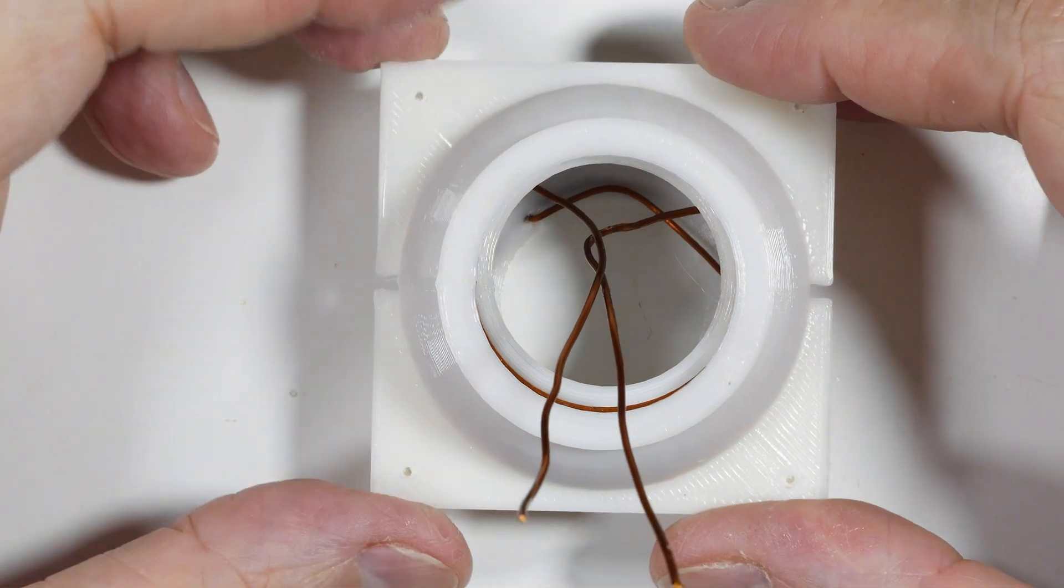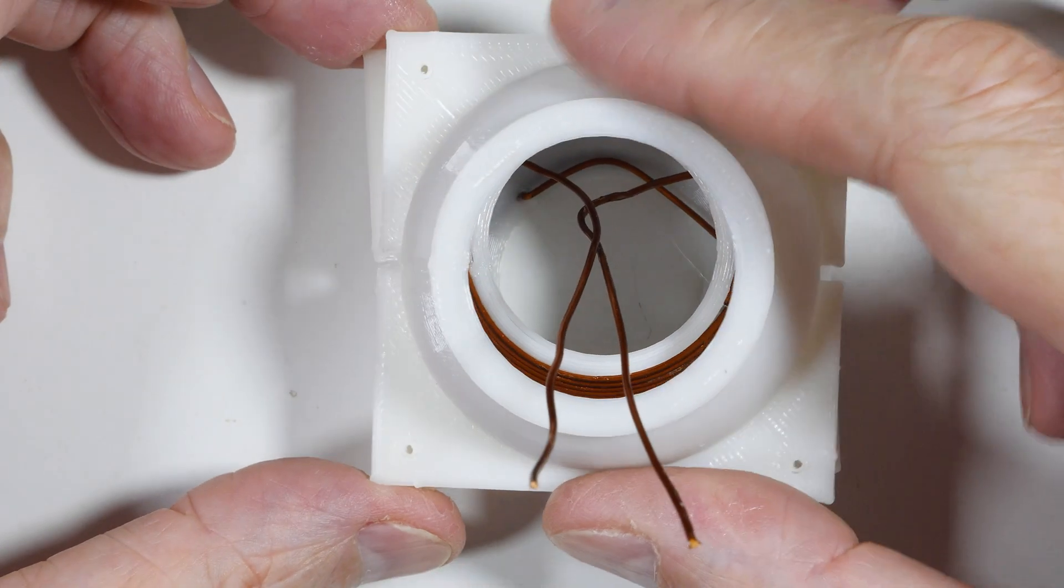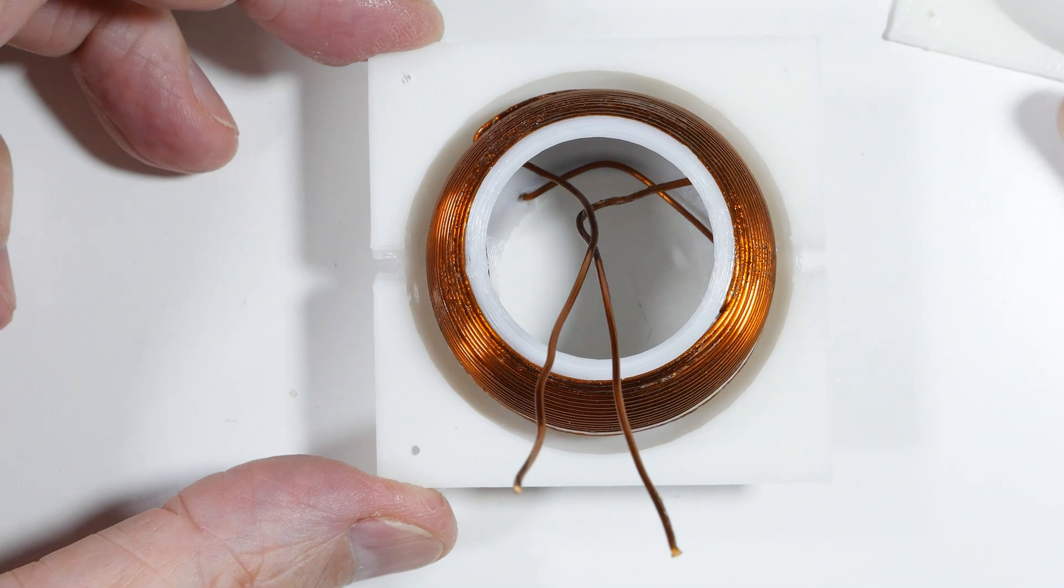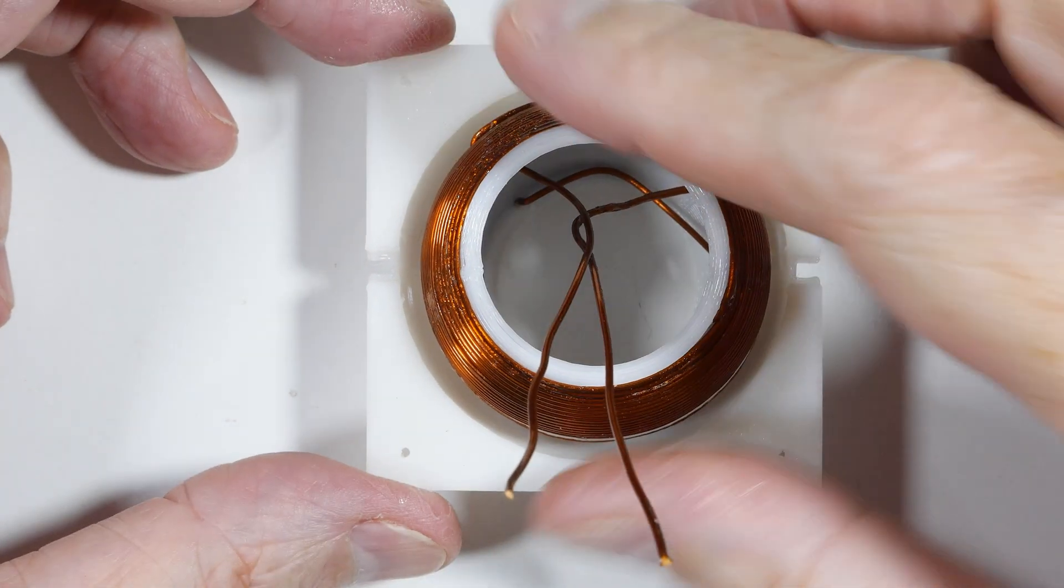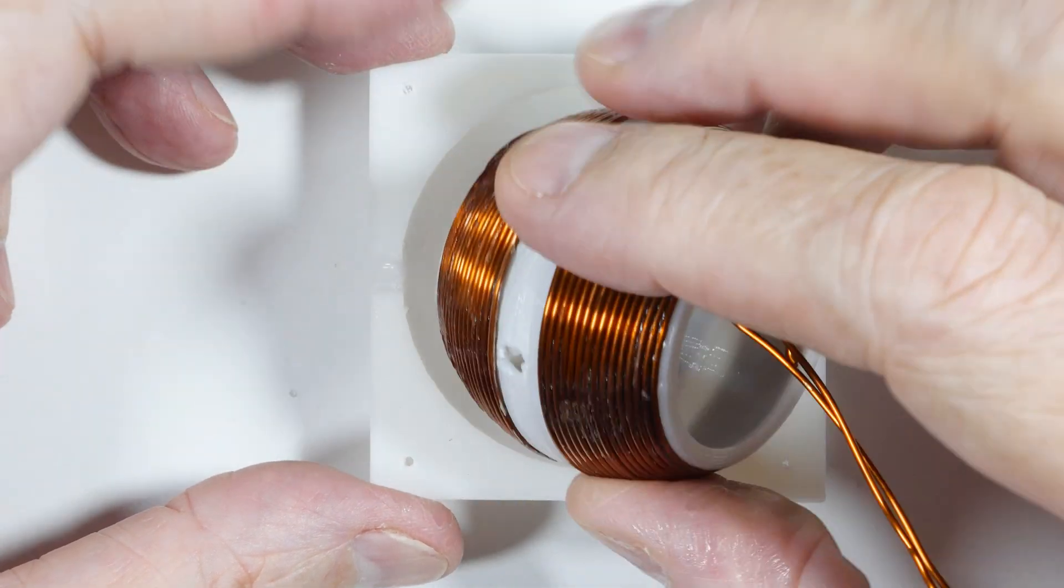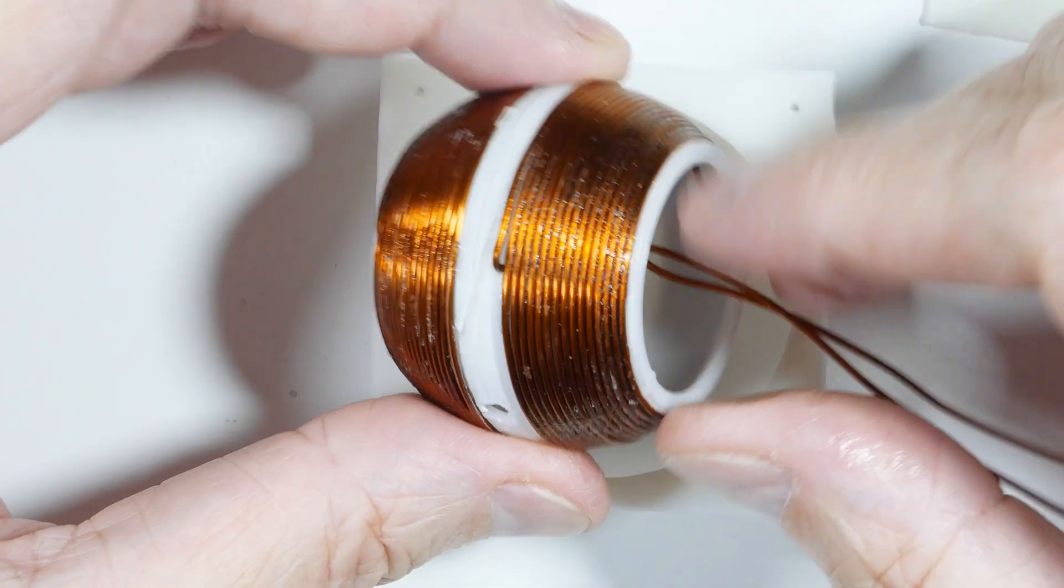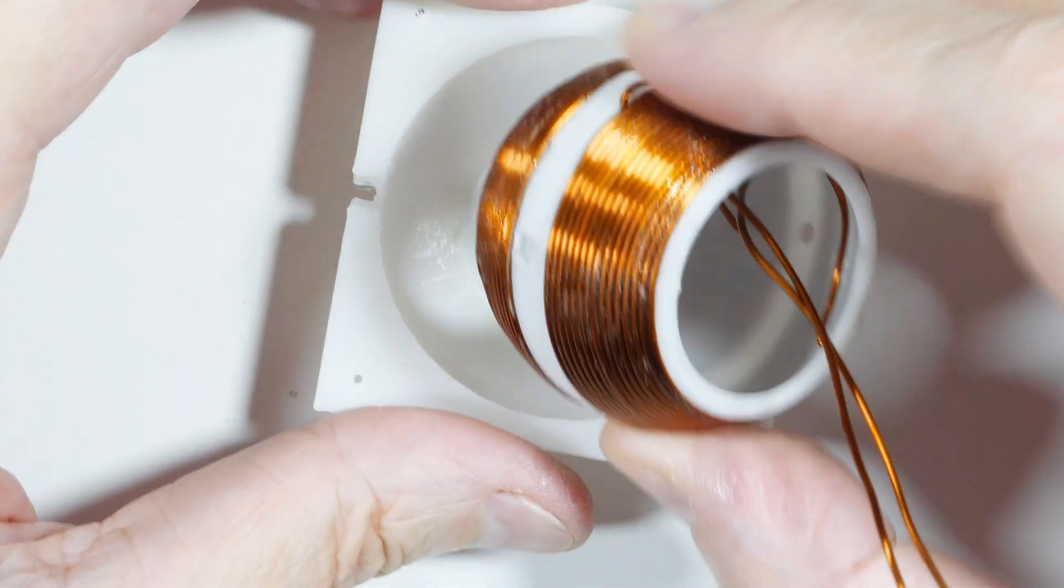This is part two of making our own variometer, and I have the center ball wound. I've got some tips and tricks for you on this. One thing is lots of super glue.